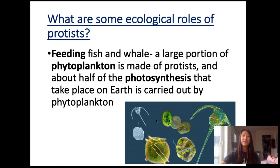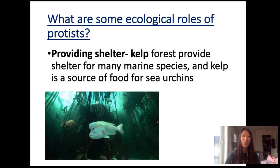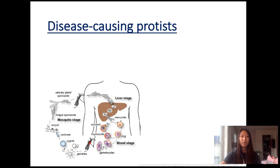Some ecological roles of protists: they can feed fish and whales, and a large part of phytoplankton is made up of protists. They can support coral reefs by producing energy through photosynthesis. They can provide shelter — for example, the kelp forest provides shelter for many marine species. They can also recycle waste, and they can do symbiosis. These protists can live in the guts of termites and help them digest wood, which produces energy for the termites.